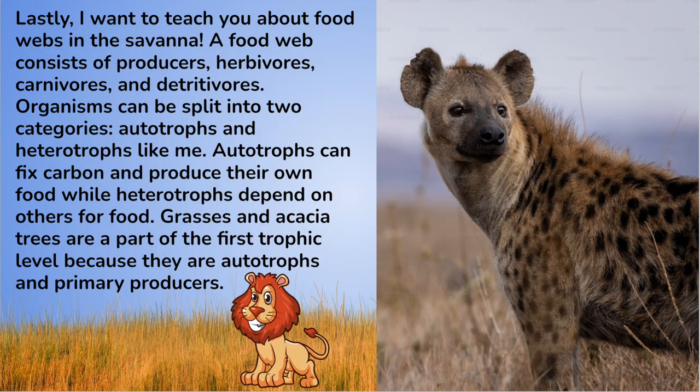Lastly, I want to teach you about food webs in the savanna. A food web consists of producers, herbivores, carnivores, and detritivores. Organisms can be split into two categories: autotrophs and heterotrophs, like me. Autotrophs can fix carbon and produce their own food, while heterotrophs depend on others for food.